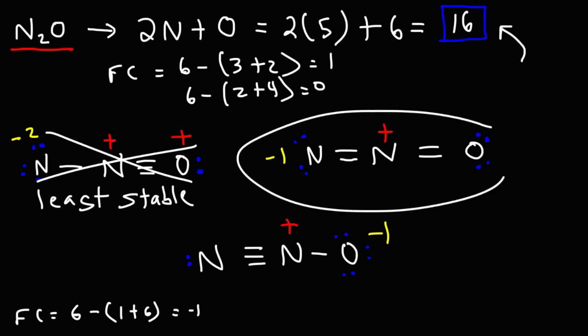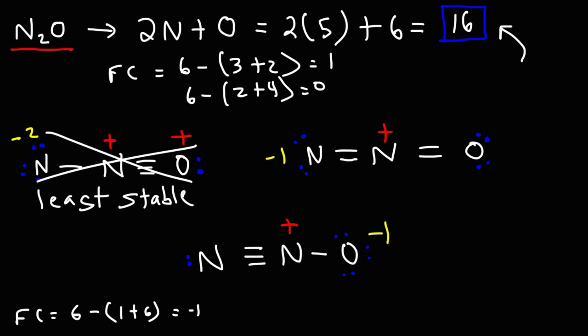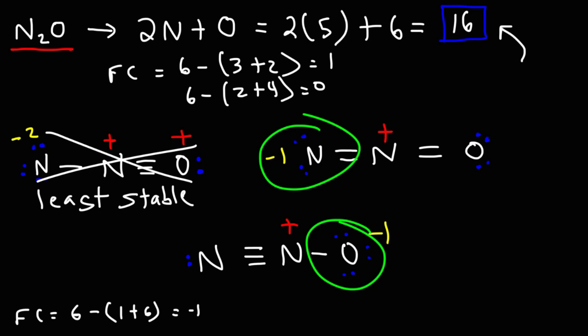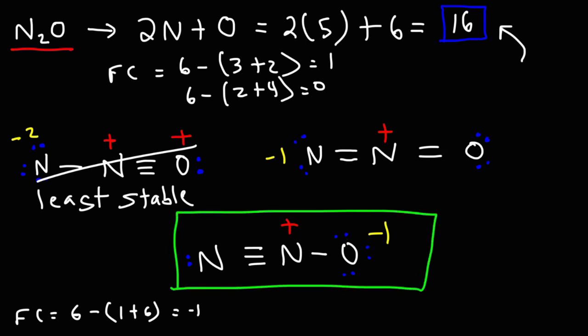The charge separation between the remaining two Lewis structures is almost identical — plus one and minus one. The difference is where we put the negative charge: on nitrogen or on oxygen. Oxygen is more electronegative than nitrogen and has a strong affinity for electrons, so it is best capable of stabilizing a negative charge. Therefore, the structure with the negative formal charge on oxygen is the best Lewis structure for N2O, as it represents the most stable resonance form of this molecule.